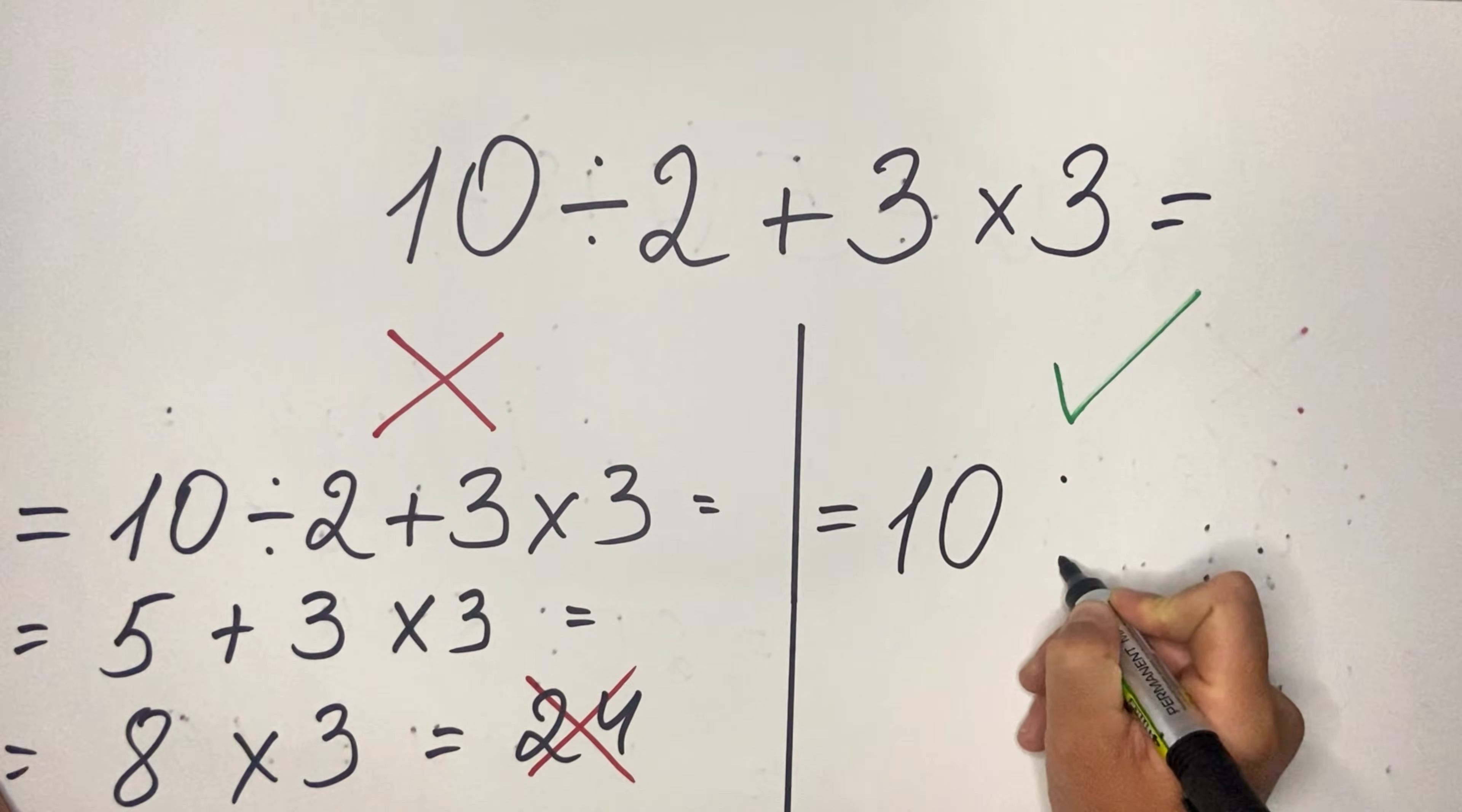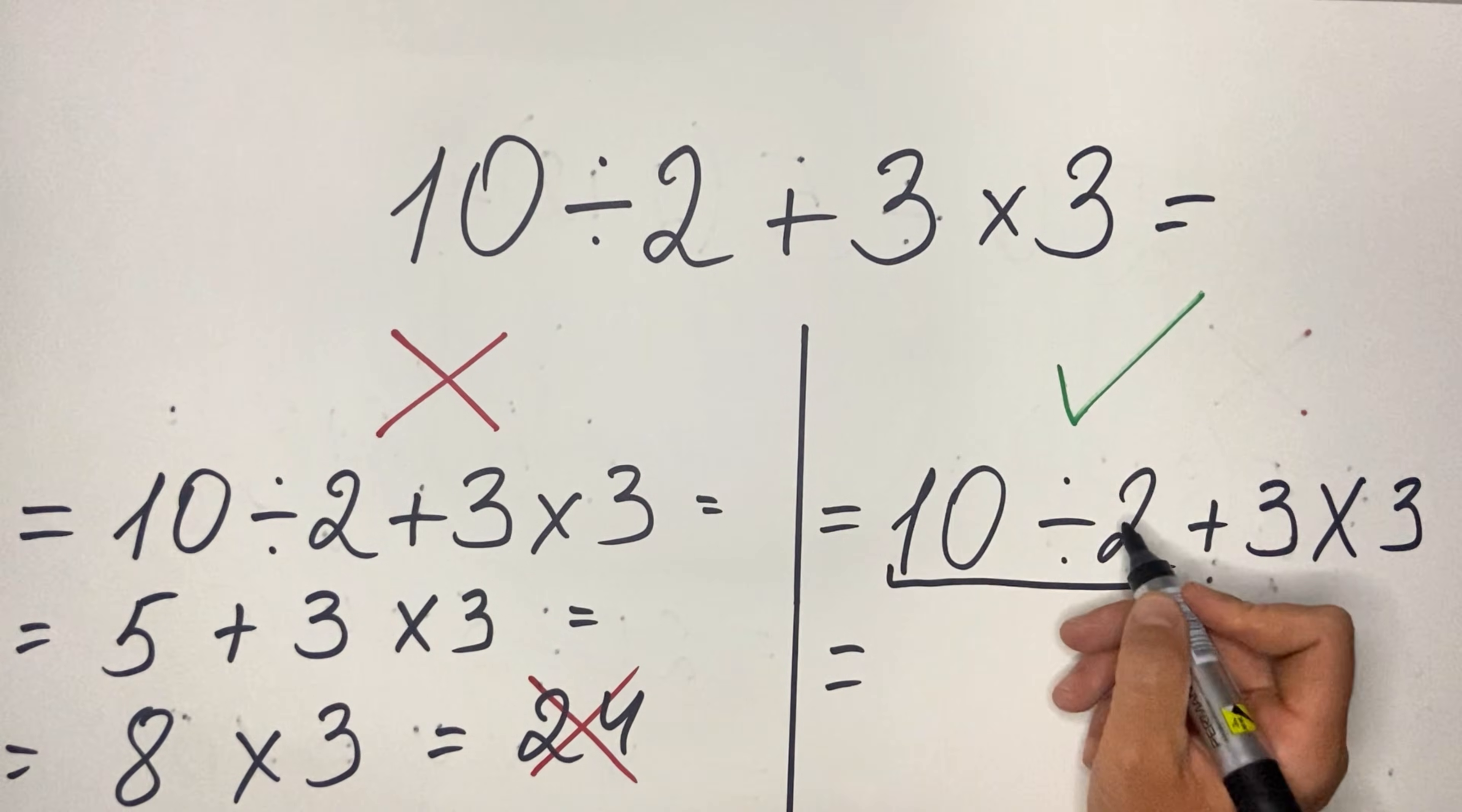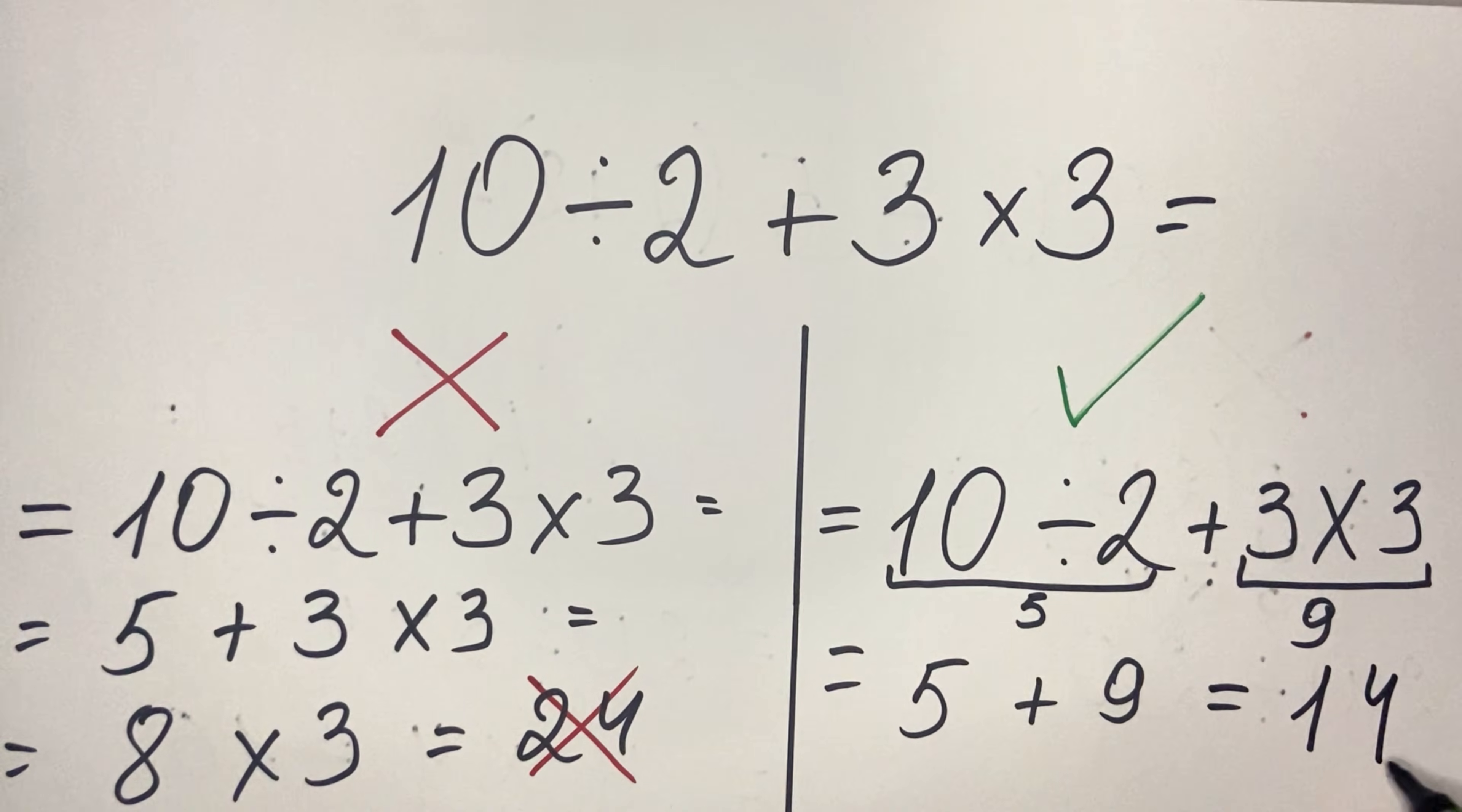Or better say, what would be the correct approach from a mathematically standard point? We have 10 divided by 2 is 5, then we have the multiplication which gives us 9. So what we have is 5 plus 9, and the result is 14.